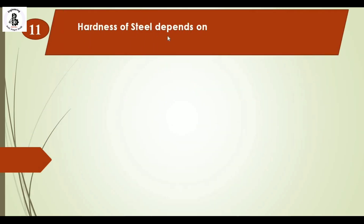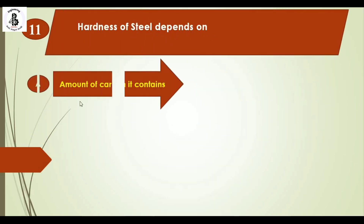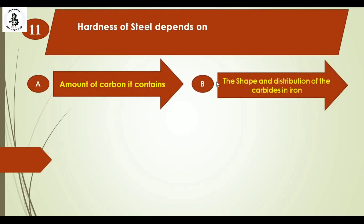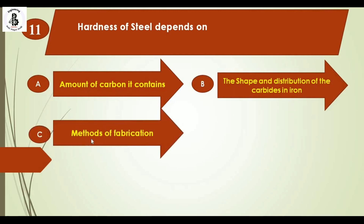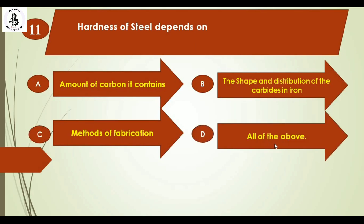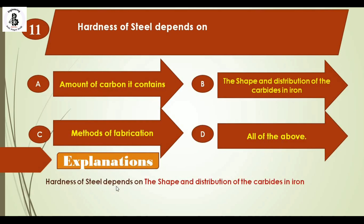Hardness of steel depends on: option A amount of carbon it contains, option B the shape and distribution of carbides in iron, option C methods of fabrication, and option D all of the above. The hardness of steel depends on the shape and distribution of carbides in iron. The right answer is option B.